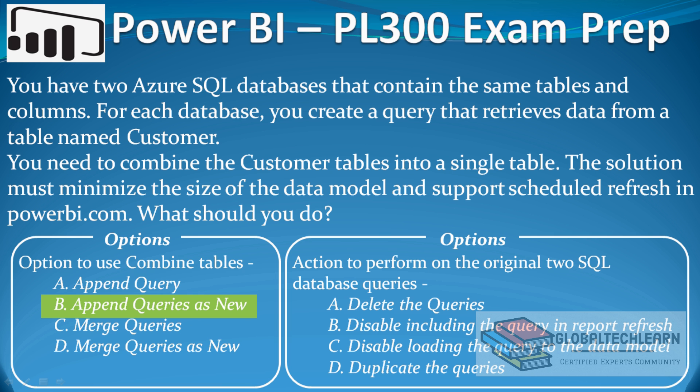With this we have achieved the first requirement. For the first set of options — options to combine tables — we can mark option B, that is append query as new, as the correct answer. Now let's focus on the second requirement, which is to minimize the size of the data model.